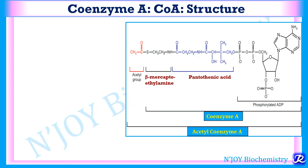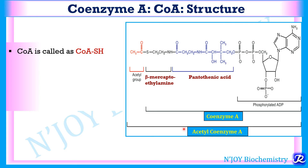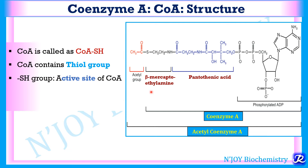Coenzyme A is derived from pantothenic acid. Its structure consists of beta-mercaptoethylamine, pantothenic acid, and phosphorylated ADP. The sulfhydryl group of beta-mercaptoethylamine is responsible for carrying the acetyl group, linked by a thioester bond — a high energy bond. Together with the acetyl group, coenzyme A is called acetyl coenzyme A. Coenzyme A is also written as CoASH because of the presence of this sulfhydryl group, also called the thiol group, which is the active site of coenzyme A.